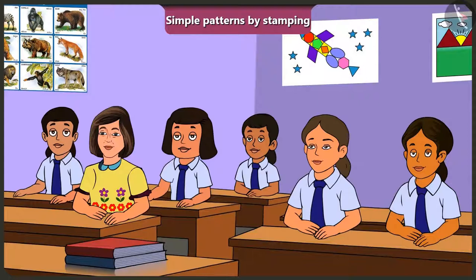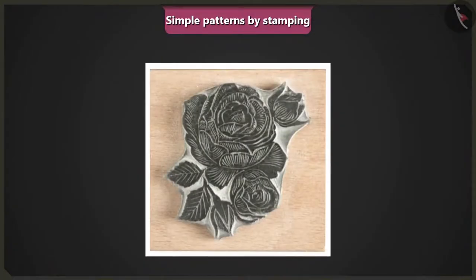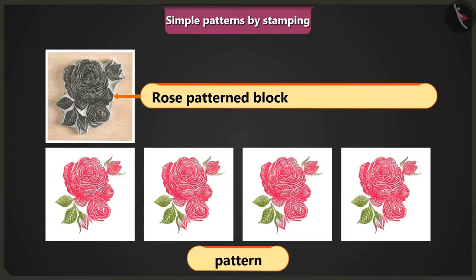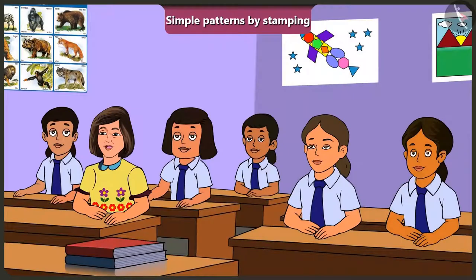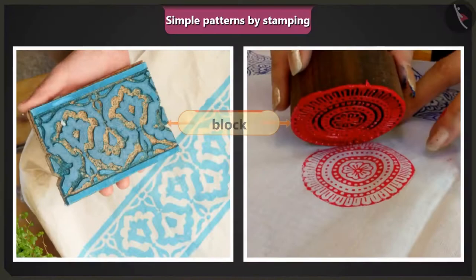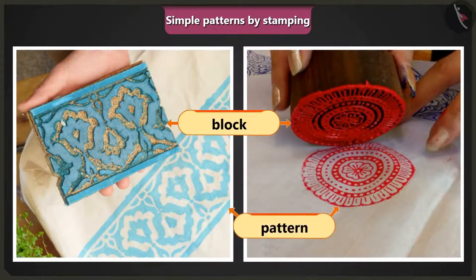Ma'am, can we make several patterns by using stamps like these? Yes, absolutely. Look, this is a block with the design of a rose flower. So we can make a pattern like this. Oh wow, ma'am. This is very easy to make such patterns. Yes, Jimmy. It's simple to make patterns with a stamp. We can easily create different types of patterns by applying colour on a block or other objects.